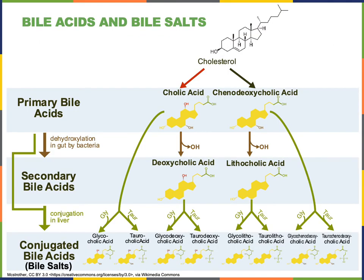Bile acids are produced from cholesterol by hepatocytes within the liver. These bile acids are then conjugated in the liver, producing the conjugated bile acids that are also known as bile salts. The bile salts are amphiphilic molecules that have a hydrophilic region and a hydrophobic region, and this is important for the function of bile, enabling emulsification of fat to break down large fat droplets and facilitate the chemical digestion of triglycerides.